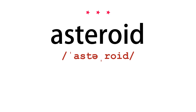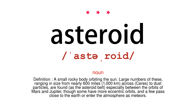Asteroid. Noun. Definition: a small rocky body orbiting the sun.